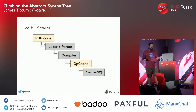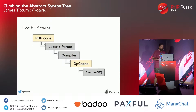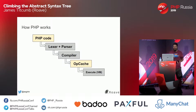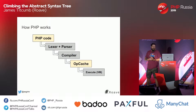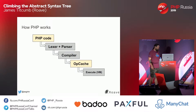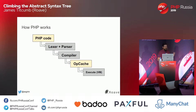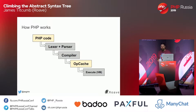Everyone with me so far? The virtual machine is not like Vagrant or anything like that. It's a virtual CPU which executes opcodes. The AST step was new when PHP 7 came out.